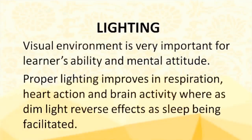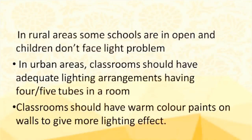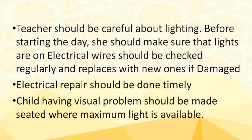Now let's discuss lighting in schools. The visual environment is very important for learners' ability and mental attitude. Proper lighting improves respiration, heart action, and brain activity, whereas dim light has reverse effects such as facilitating sleep. In rural areas some schools are in the open and children don't face a light problem. In urban areas, classrooms should have adequate lighting arrangements with 4-5 tubes in the room, warm color paints on walls to give more lighting effect. Teachers should make sure lights are on before starting the day, electrical wires should be checked regularly, and children with visual problems should be seated where maximum light is available.